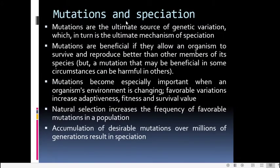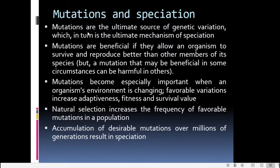Speciation means the evolution of a new species, and variations form its basis. In a population with many organisms having variations, if an environmental change suddenly appears, those individuals with characteristics giving them adaptive value in that environment will be selected by nature. Natural selection picks up variations well-adapted to the environmental change, and they evolve into a new species. Mutations are thus the ultimate source of genetic variation, which in turn is the ultimate mechanism of speciation.